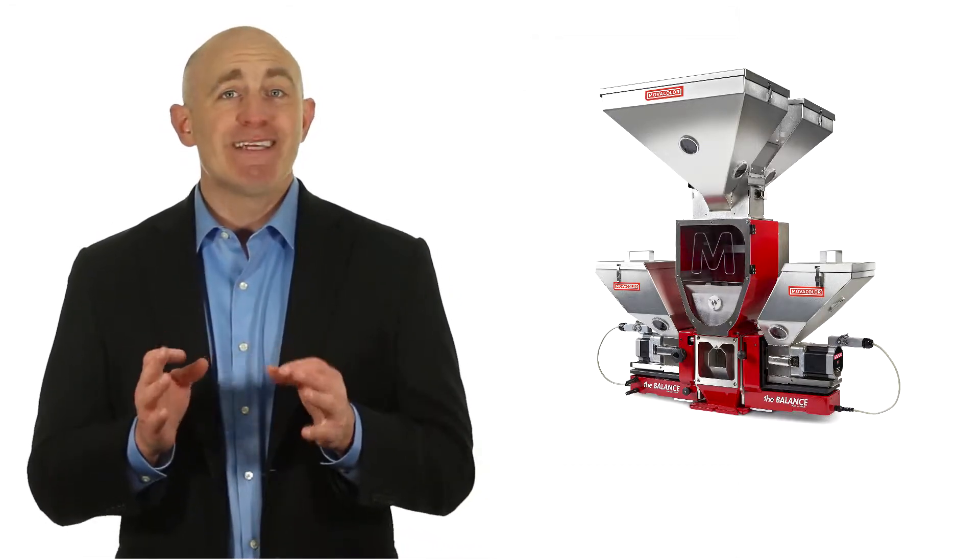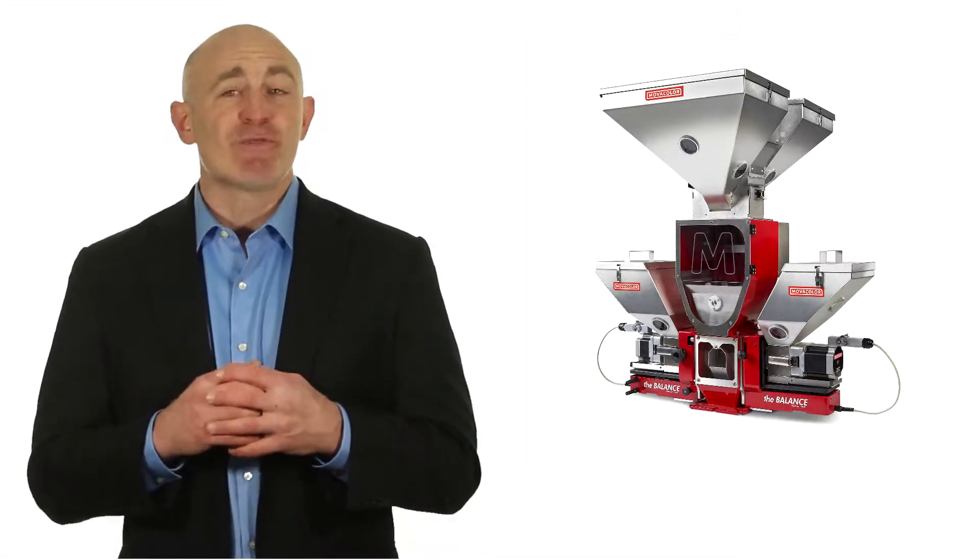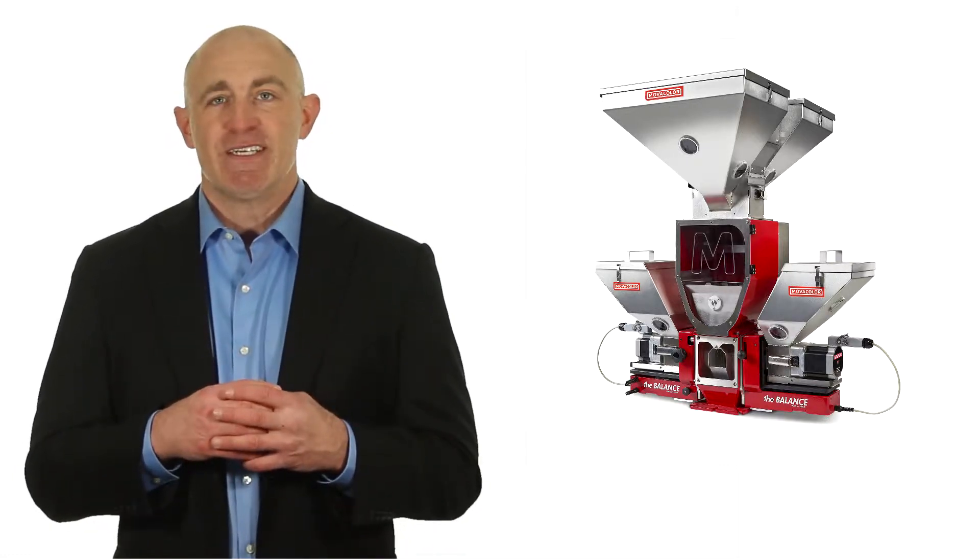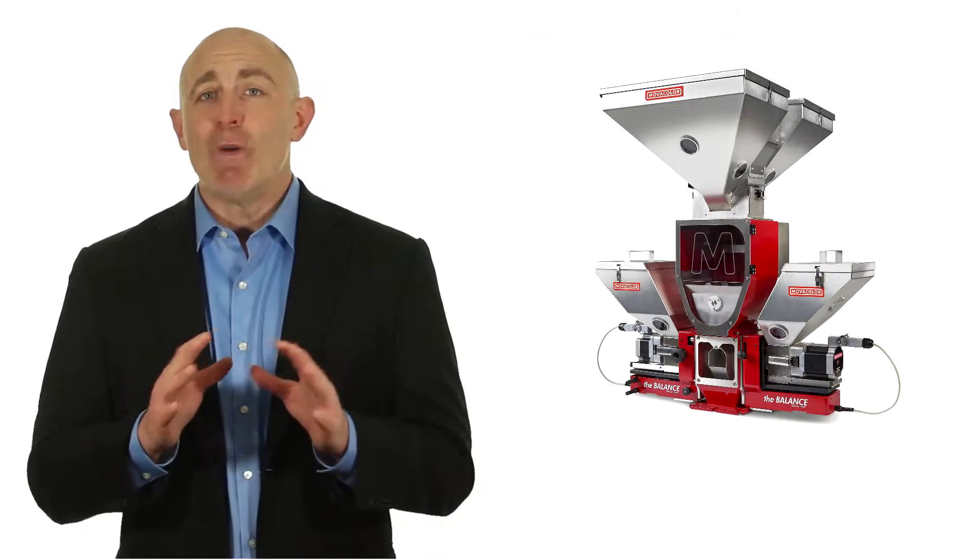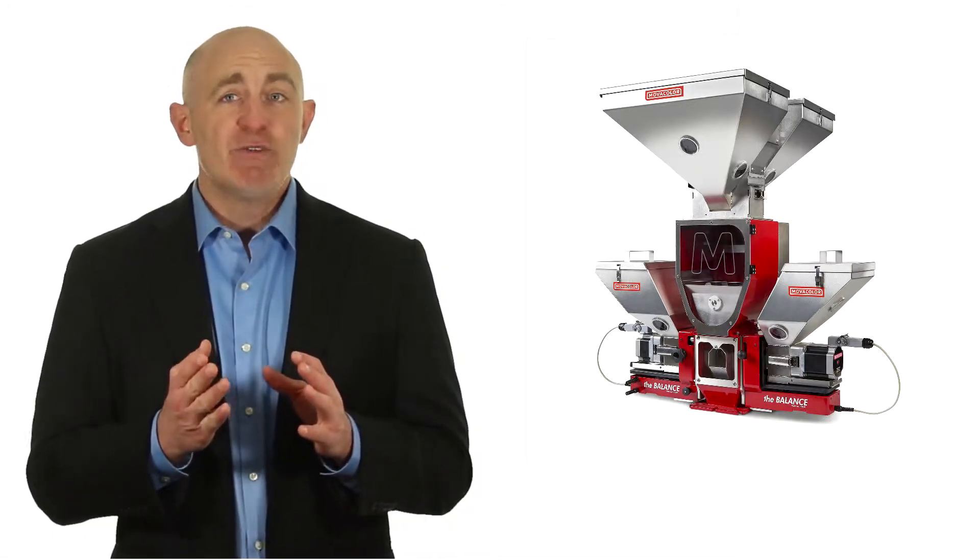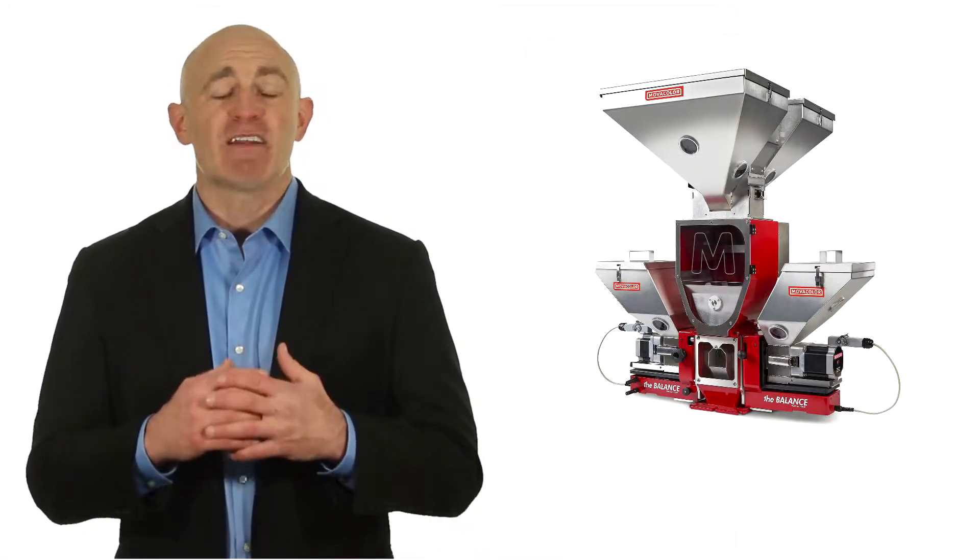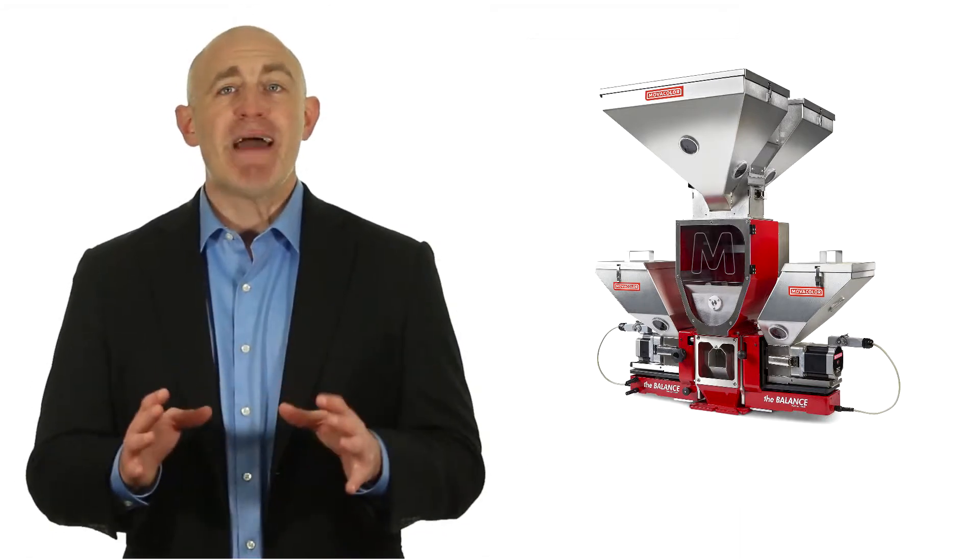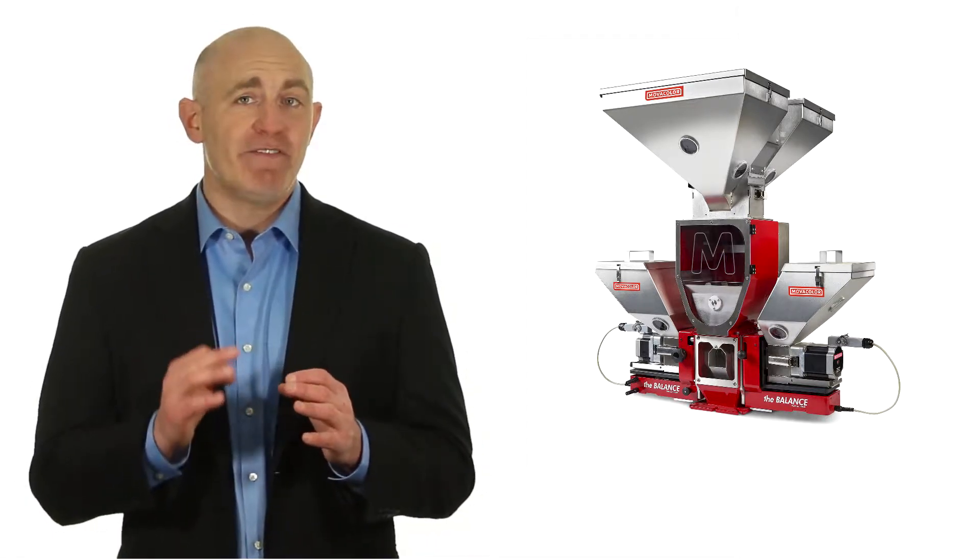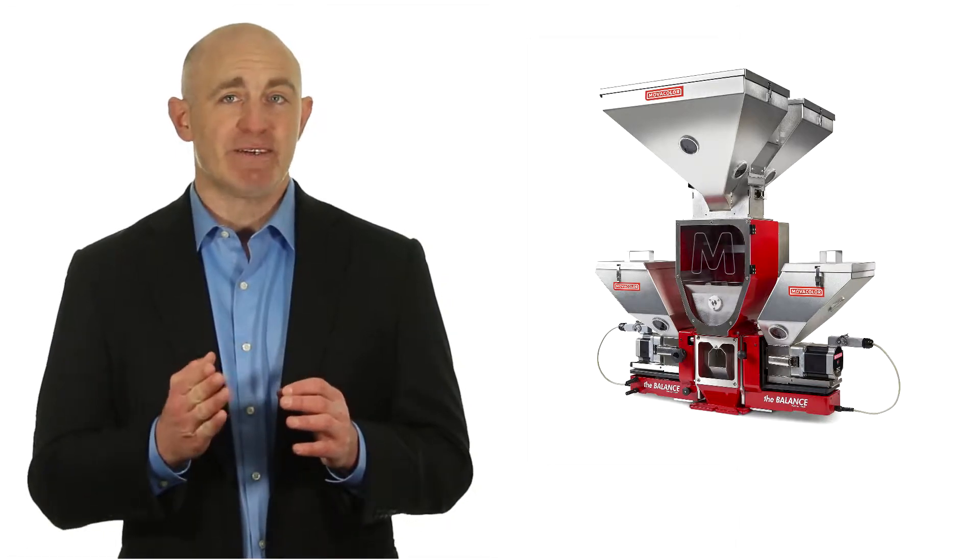The MC Hybrid is a simple gain-and-weight blender for regrind and virgin material. Color and additives are always added at the machine throat to avoid any possibility of color separation. You can mount an MC Hybrid over a color feeder on your machine for a low cost on-the-machine blender.